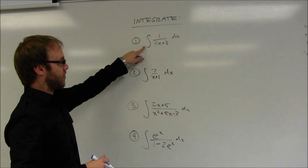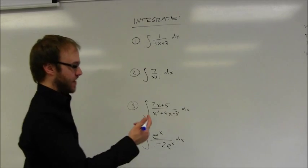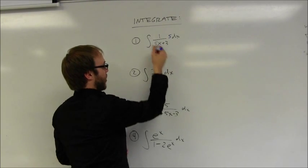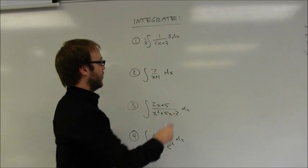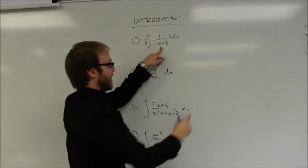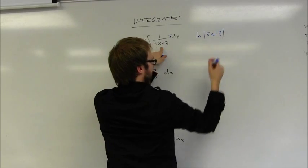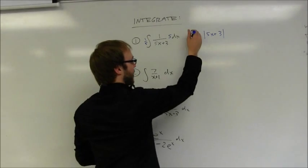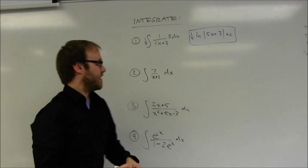The first example is a reciprocal function, so the derivative of the inside function is the only thing I need to consider. This is going to be a natural log integral. The derivative of the inside function is five, so I need to balance that by multiplying by one-fifth on the outside of the integral. The derivative of the inside function gets pulled back in during integration, so I'm really just taking the integral of the reciprocal, which is the natural log of the absolute value of 5x plus 3 — I can't take the natural log of negative values. With the one-fifth out front, and remembering to add the constant C for any indefinite integral, that's the answer.